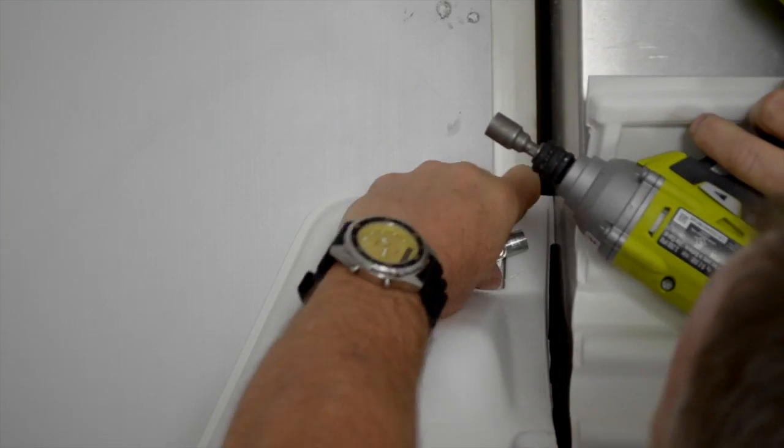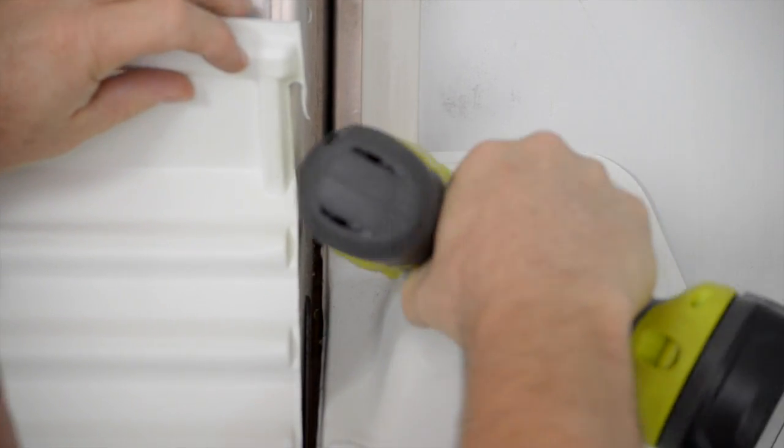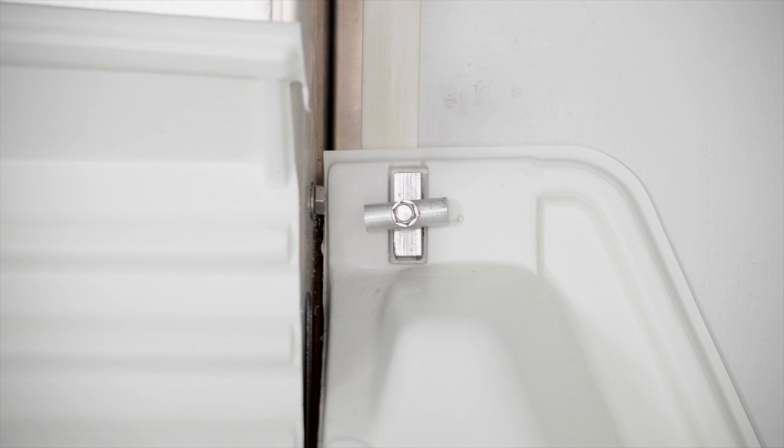Place the latch in the cutout and secure with the provided self-tapping sheet metal screws into the front wall unit side post. When installed, turn the latches to secure the top section against the front wall of the trailer.